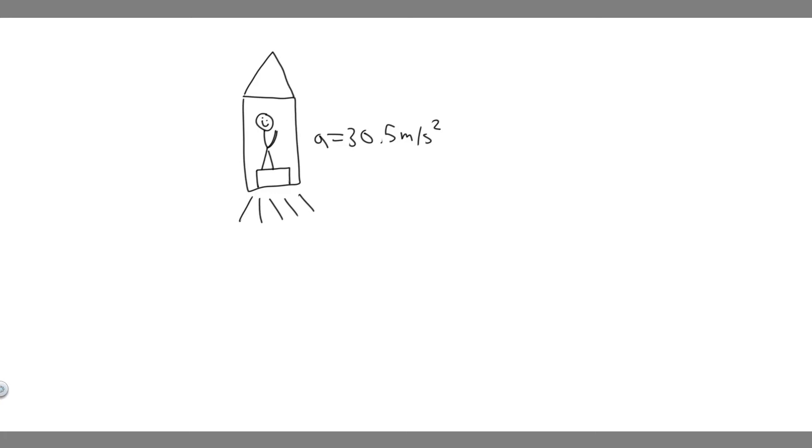In this problem, we're told suppose a rocket launches with an acceleration of 30.5 meters per second squared. What is the apparent weight of a 92 kilogram astronaut aboard this rocket?